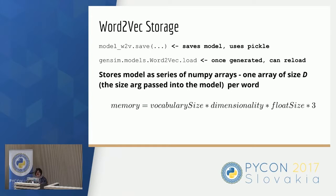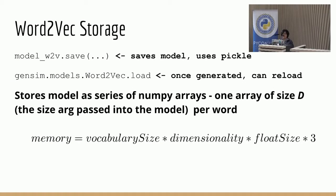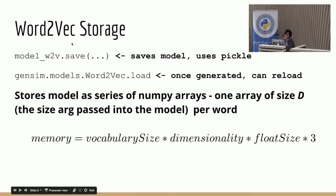After you've created this model, you probably want to save it so that you can go back and train it again — basically add more documents. In our case, we built a system where we would read in new articles from a Kafka queue. Every time there were new articles added, we would take the saved model and then add in the new article and train on top of it.